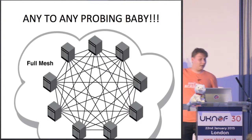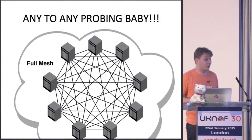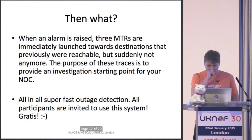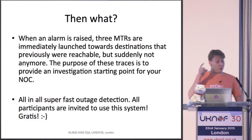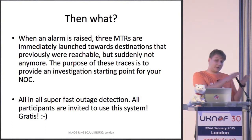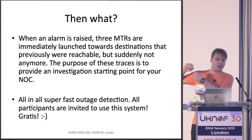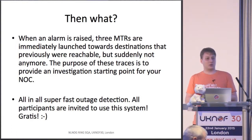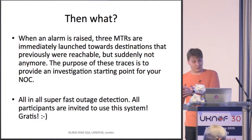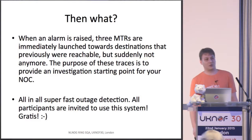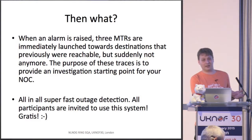This is basically a visualization of what is going on — all nodes ping each other, any-to-any connectivity testing. The neat trick is when an outage is detected: if previously 30 nodes were unreachable but now there are 70 nodes unreachable, the program will pick three random nodes that were previously reachable but suddenly are not anymore, and it will launch MTRs to those destinations and put that in the alert email.